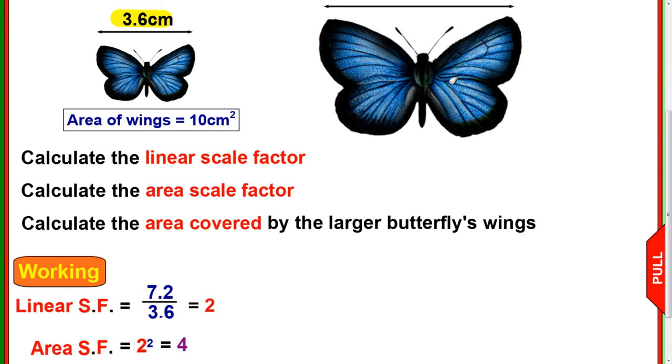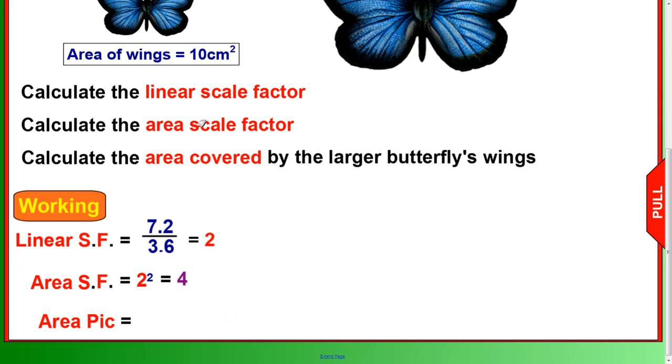So basically this area here is 4 times bigger than this smaller one. So finally, to work out the area of the bigger one, we know the smaller one is 10. So the area of the bigger picture is 10 times 4, which is 40 centimeters squared.